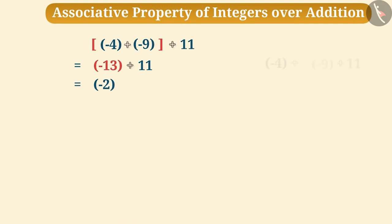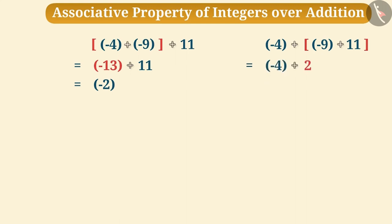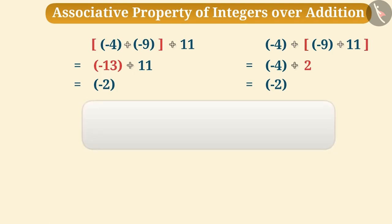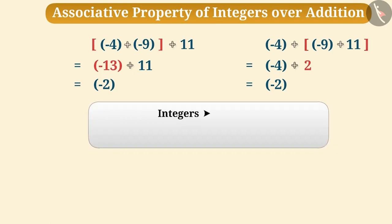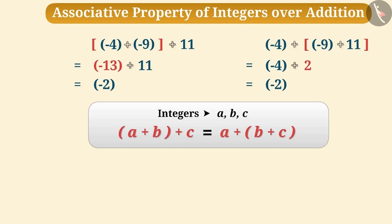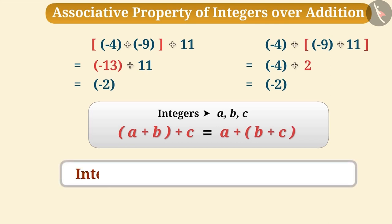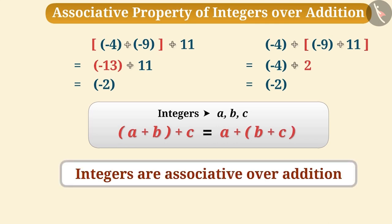Similarly, if we make a group of minus 9 and 11, their sum will be 2. When we add minus 4 to it, the sum of the three numbers will also be minus 2. The answer is the same in both cases. That means we can group integers in any order to add them. In general, for any three integers a, b, c: (a + b) + c = a + (b + c). Therefore, integers are associative over addition.